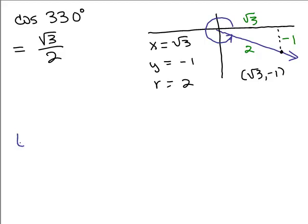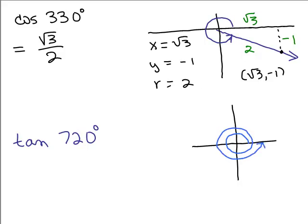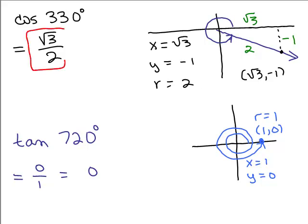What is the tangent of 720 degrees? All right, so what does that look like? Well, 720 degrees, that's 2 times 360. So this means you're going around twice, and you're ending up right here. And so that is a quadrantal angle. And so that ordered pair is just 1, 0, and R is 1. So X is 1, and Y is 0. And the tangent, how do you get the tangent? It's Y over X. So this is 0 over 1, or 0. So here's that problem.